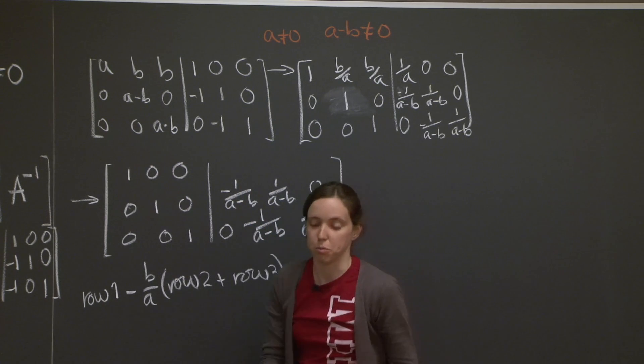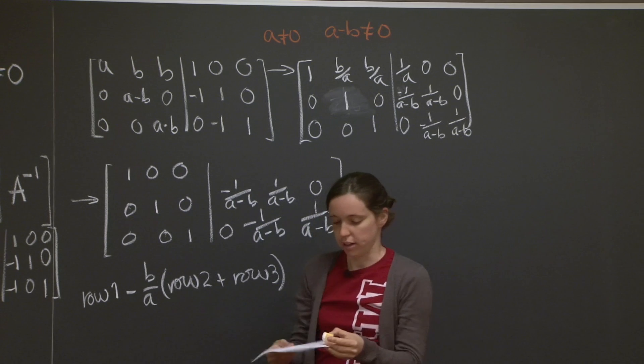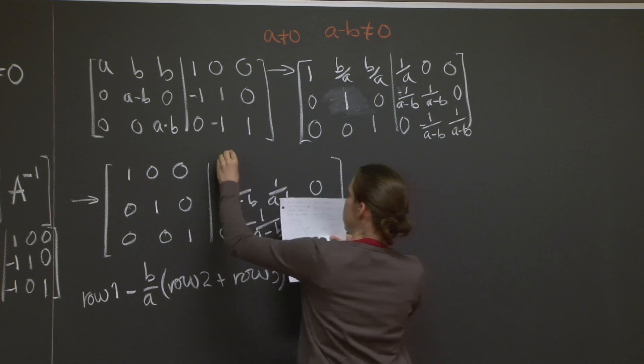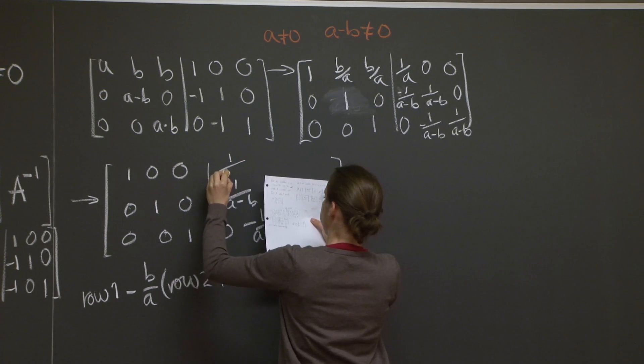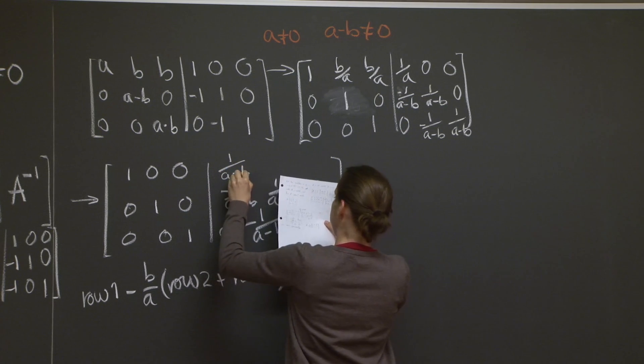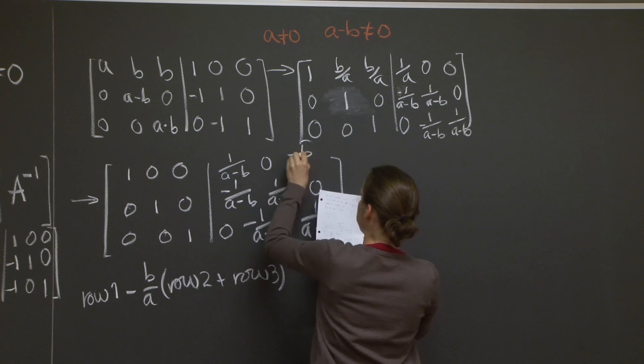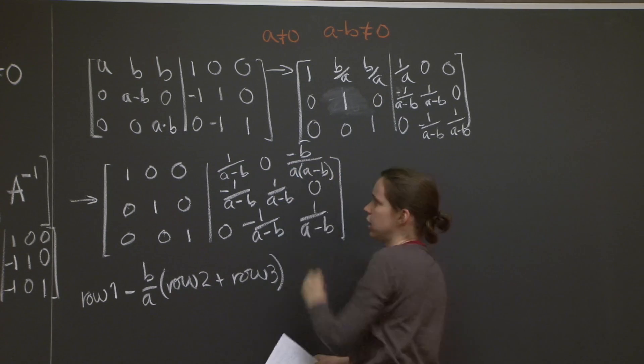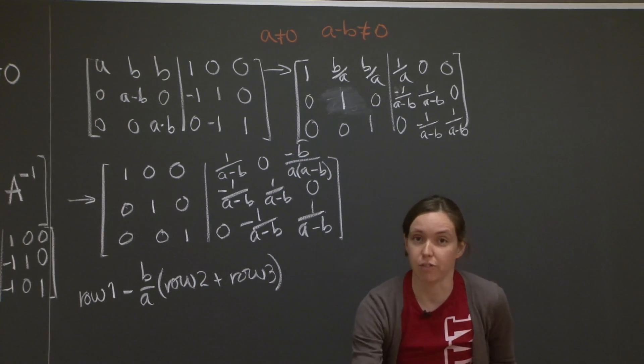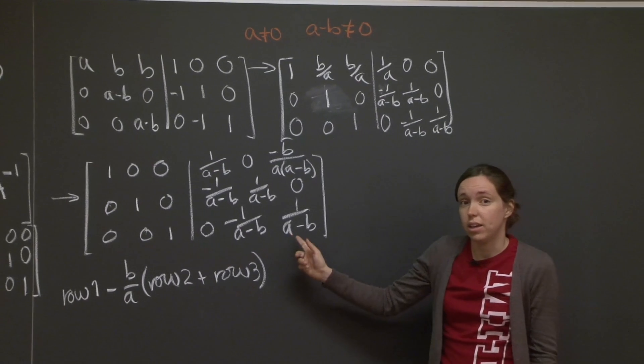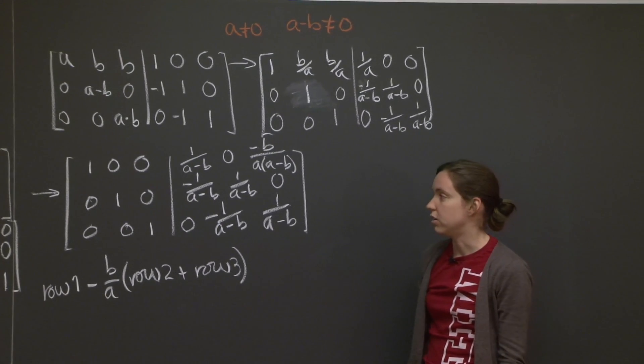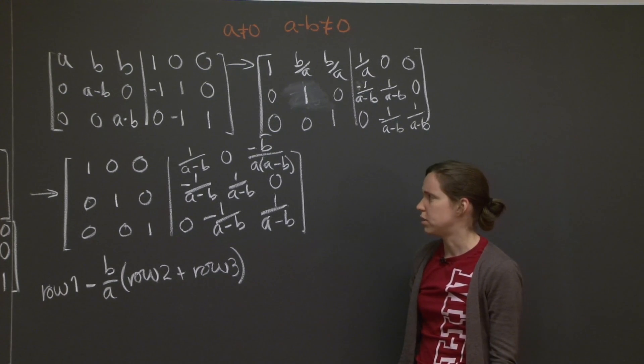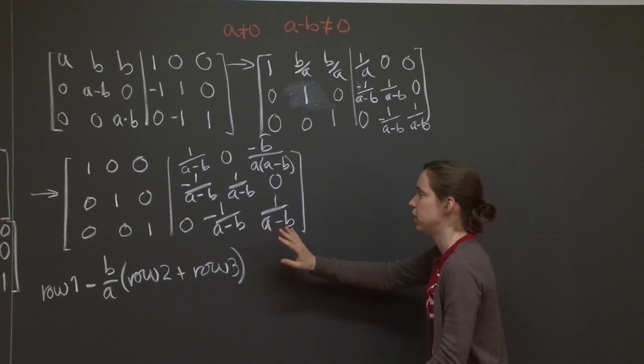This is where I'm going to go to my notes and tell you that these numbers are 1 over a minus b, 0, minus b over a minus b. That looks pretty awful, but that is A inverse. And we're done, except it looks terrible, so let me just write it in a nicer way.